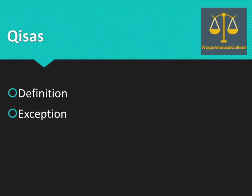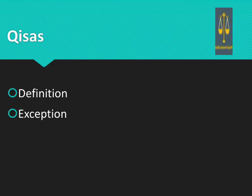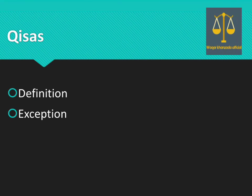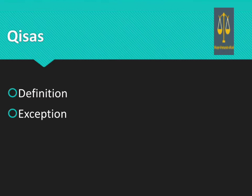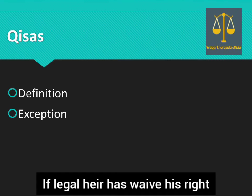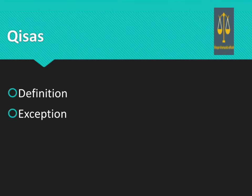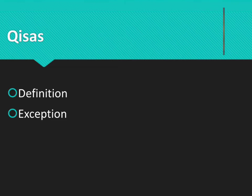There are exceptions in cases of Kisaas. There are four cases where the court will not apply the punishment of Kisaas. The first one is death of offender. The second is waiver by Wali — if there is a legal heir who waives the right. The third one is right of Kisaas devolves on the offender.